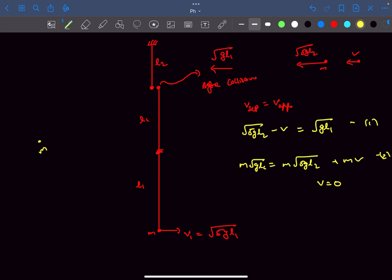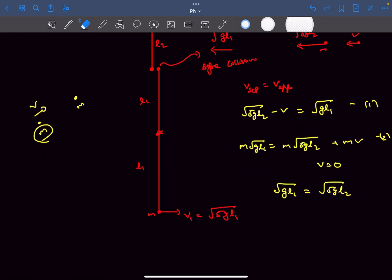You could have also used the result that if you have a mass m moving with velocity v and it collides elastically with another mass m, then the velocities get exchanged. From here we can say that square root gl1 equals square root of 5gl2, and in the given problem they ask the value of l1 by l2 which would be 5.